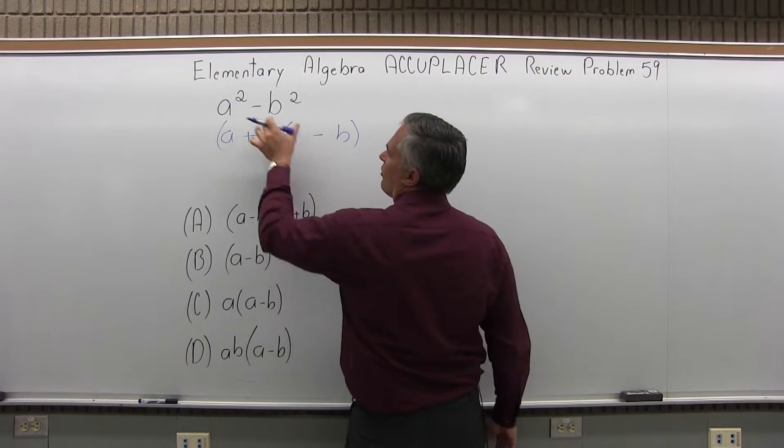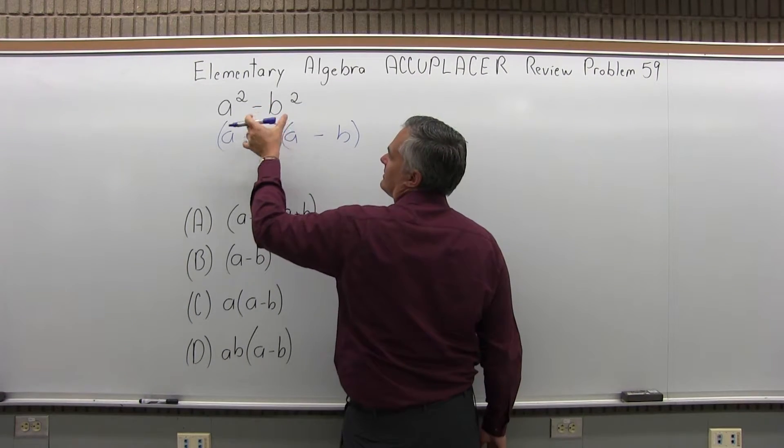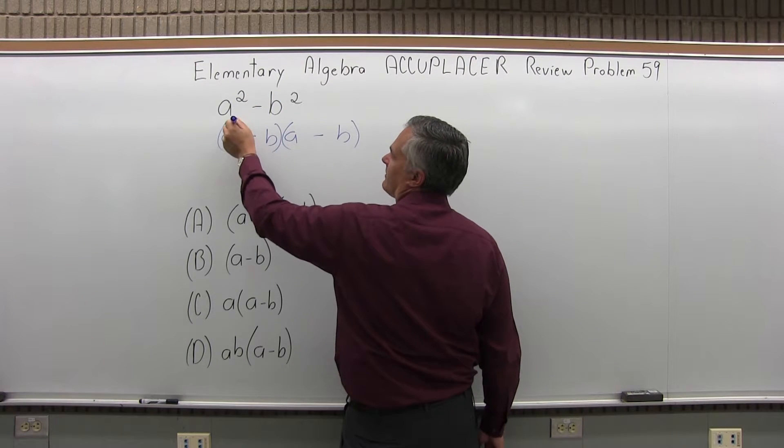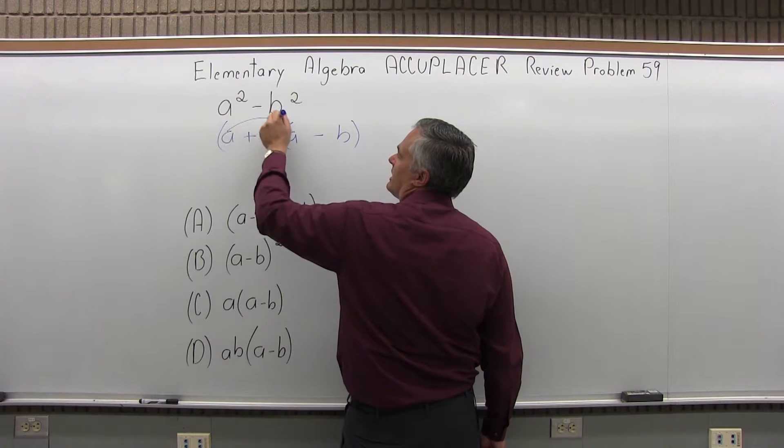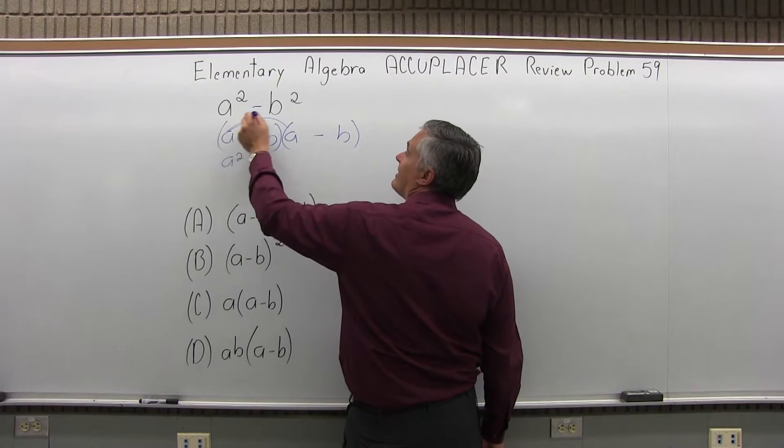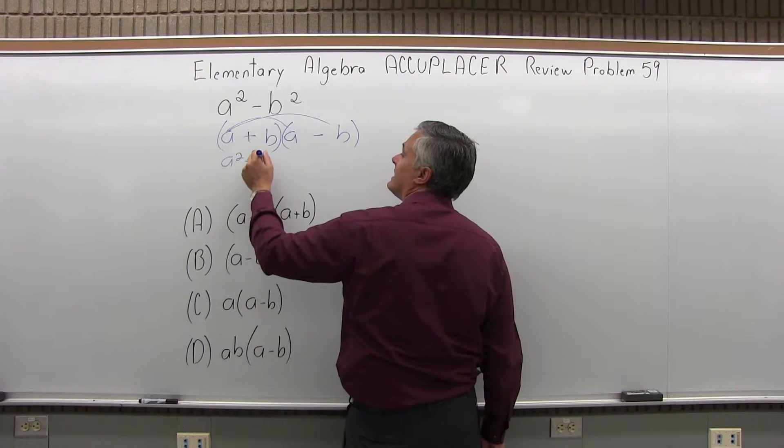But it's just nice to see why does it break up that way? It looks like there's something missing. So you can check it if you multiply it out. a times a is a to the second. a times minus b is minus ab.